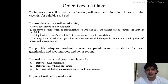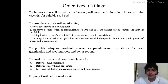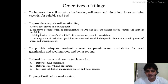Now, talking about the objectives of tillage — why do we conduct tillage? There are a lot of objectives because it functions in a wide array of areas. The first objective is improving the soil structure by breaking soil masses and clods into loose particles so that we can perform sowing operations. Similarly, tillage provides adequate soil aeration, which is very important since soil includes both moisture and air, and that air is required for root growth and development.